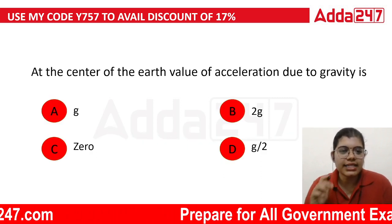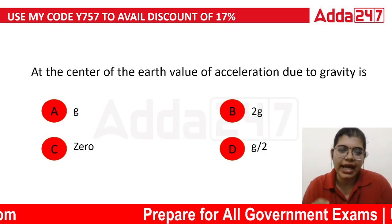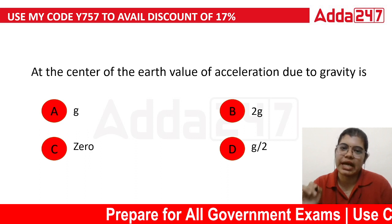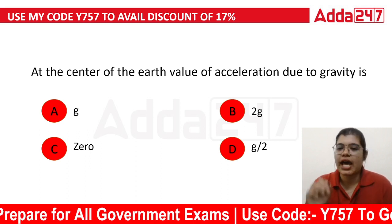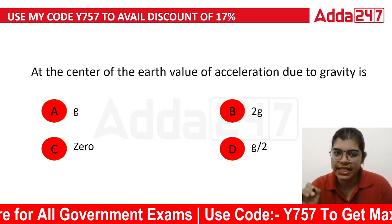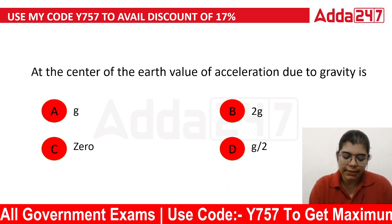First question: At the center of the earth, the value of acceleration due to gravity is dash. At the center of the earth, what is the value of acceleration due to gravity?